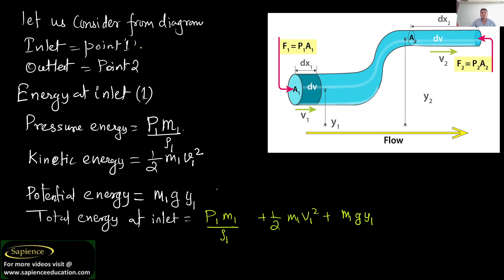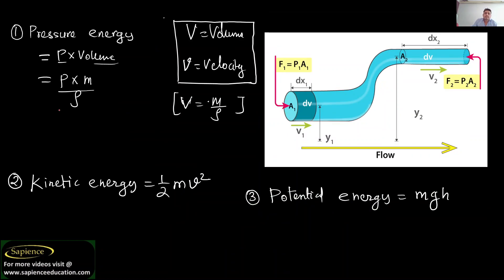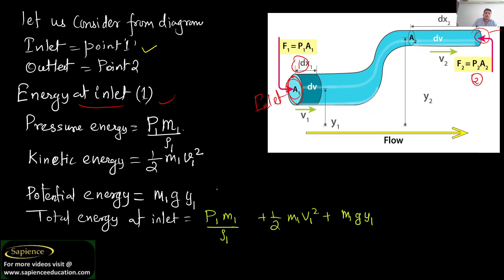From the diagram, the inlet point is where pressure P1 acts. At inlet section (point 1), pressure energy is P1·m1 divided by rho1. Kinetic energy is half times m1 times v1 squared, and potential energy is m1 times g times y1, since the inlet is at a height of y1 from the ground.